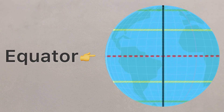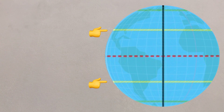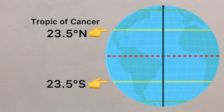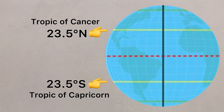As you move north and south of the equator, you'll reach the tropics. These are lines of latitude at 23.5 degrees north and south of the equator, and are named after star signs — Cancer in the north, Capricorn in the south.